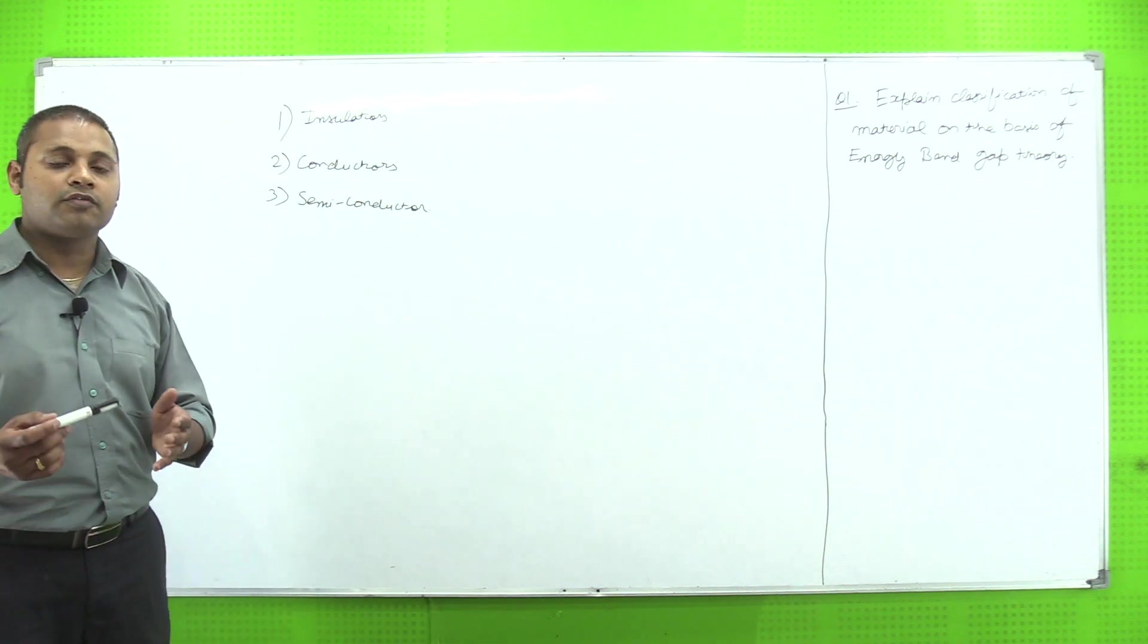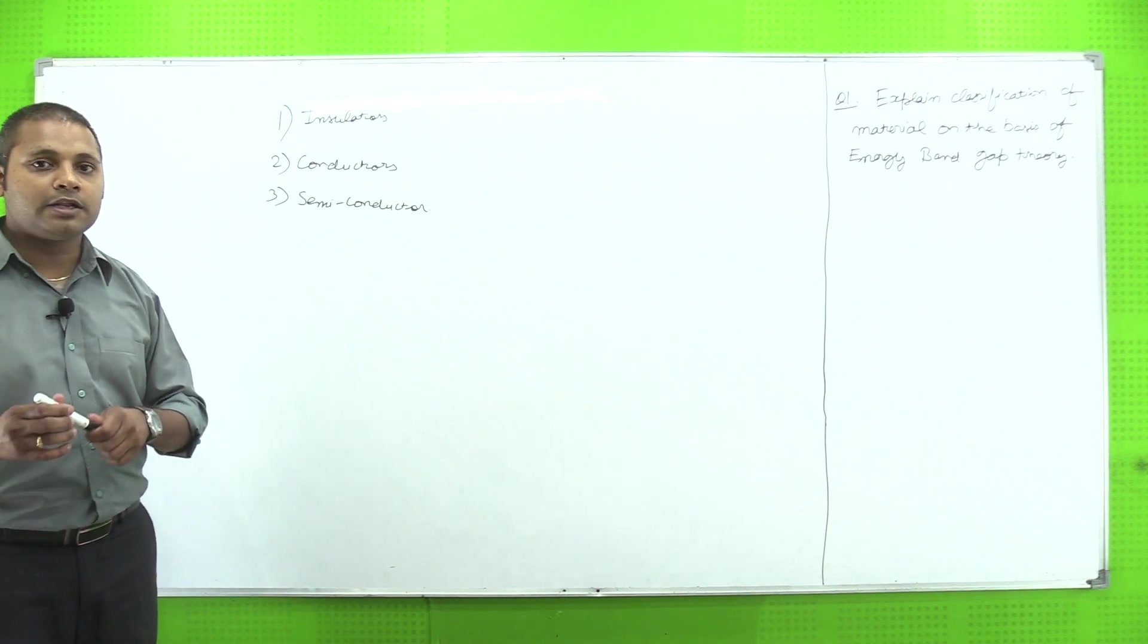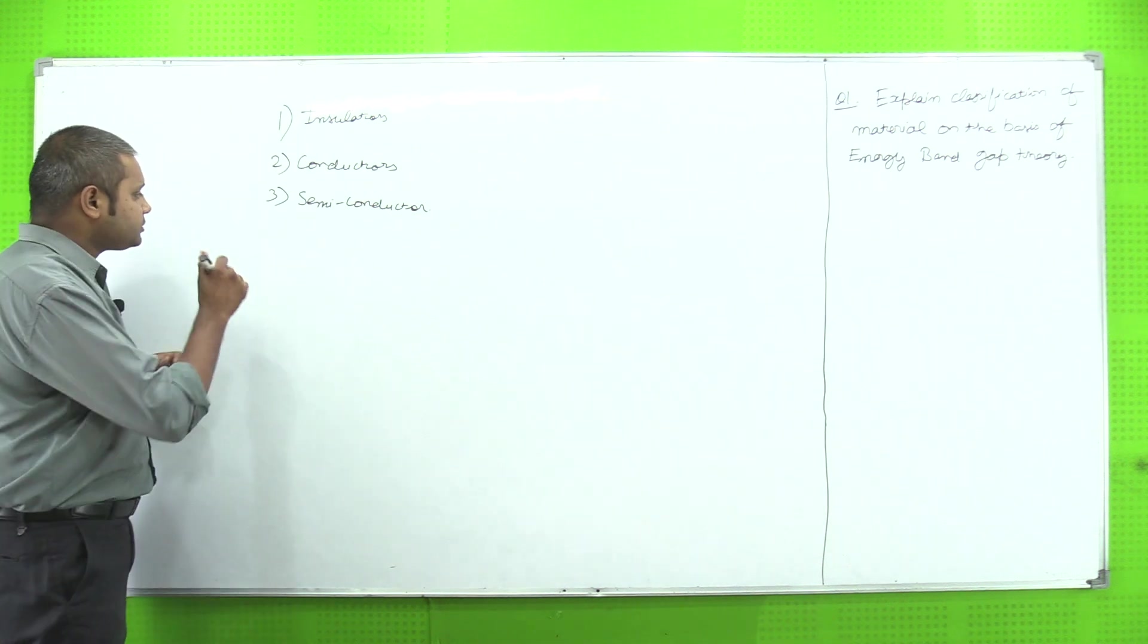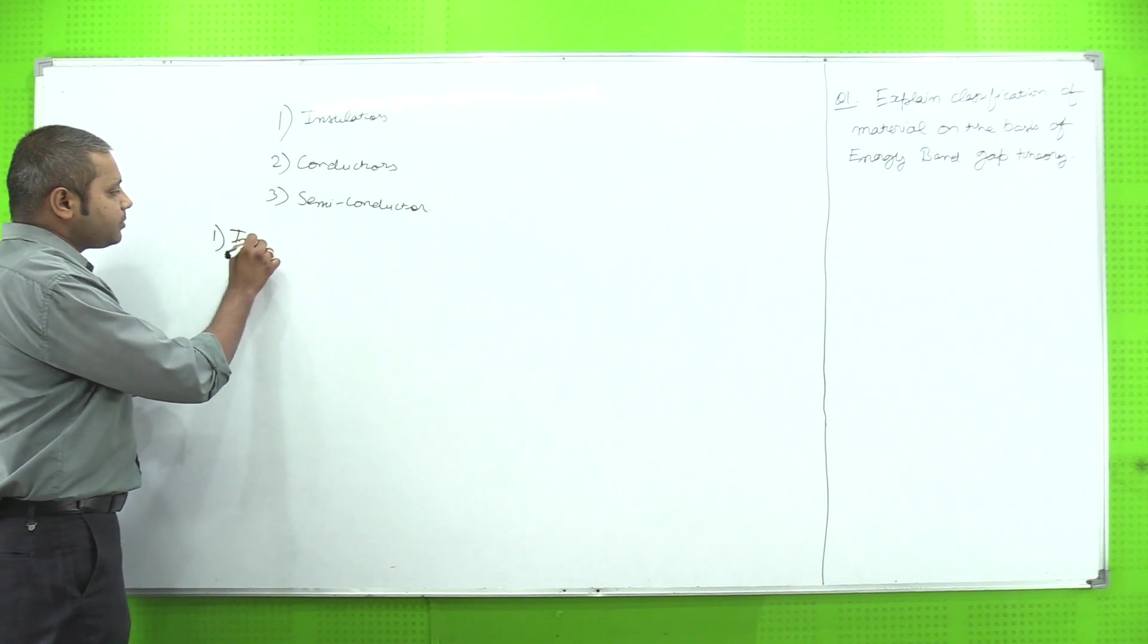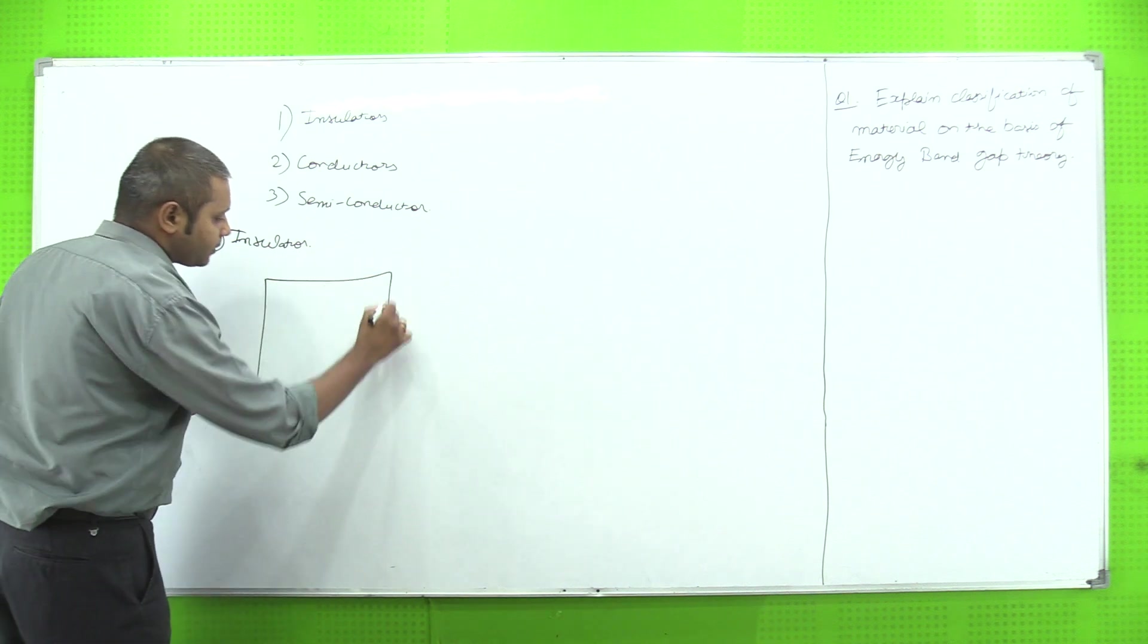Ab hume jo question hai, woh question hai energy band theory ke according. Energy band gap theory mein we have conduction band, valence band, and forbidden band. Ab hume jo bhi material ko explain karna hai on the basis of energy band gap, in which we show conduction band, valence band and forbidden band. First one is insulators.